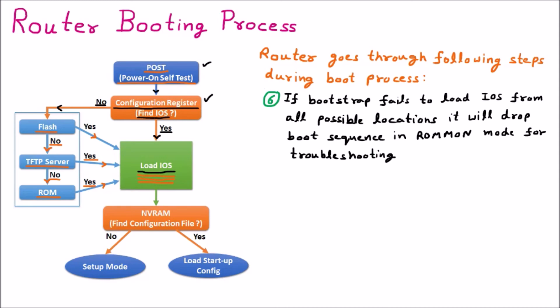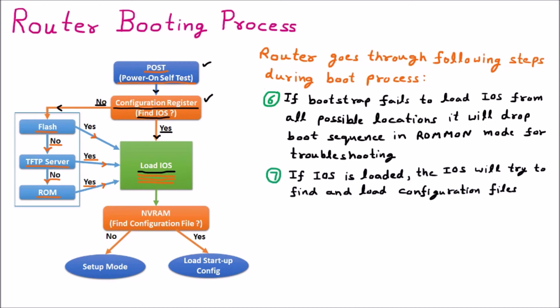Step seven: once the IOS is loaded, it will try to find and load the configuration. As shown in the diagram, the next step is NVRAM — non-volatile RAM — where the router looks for the configuration file. There are two cases: the configuration file is present, or it is not.